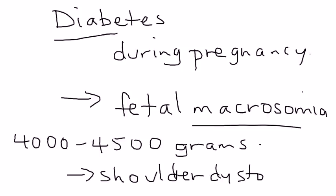Shoulder dystocia occurs simply because the fetus is so large that the delivery results in this complication. The fetus's shoulder becomes impacted against the mother's pelvic bones — the pubic symphysis — and that can lead to this problem.